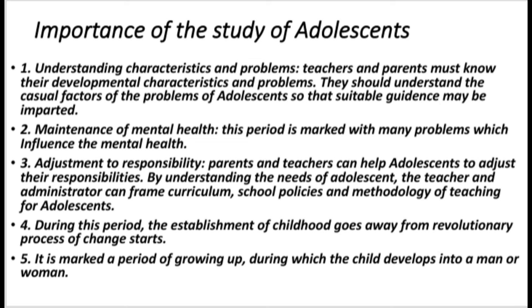The meaning and definition of adolescence: adolescence refers to the period of development and adjustment during the transitional period between childhood and adulthood. The period emerges from childhood and merges into adulthood. During this period, the child's dependency goes away and a revolutionary process of change starts — it is a period of growing up during which the child develops into a man or woman. Today the term has a broader meaning: instead of limiting adolescence to the time when an individual reaches sexual maturity, it is extended until the individual is expected to be intellectually, emotionally, and socially mature.